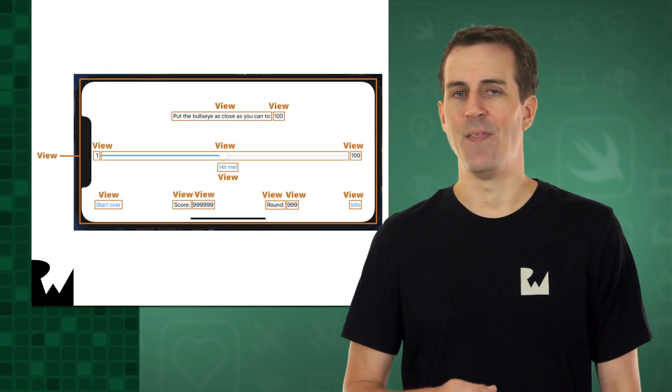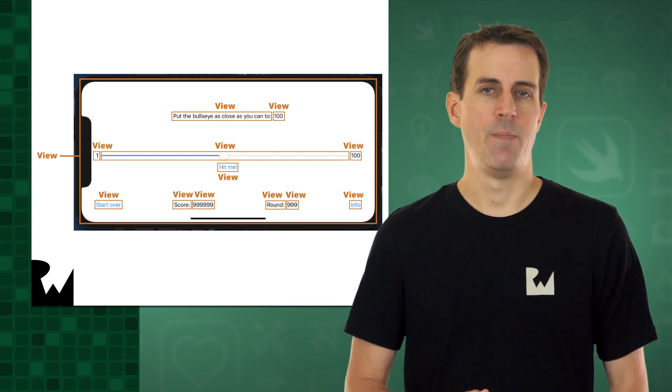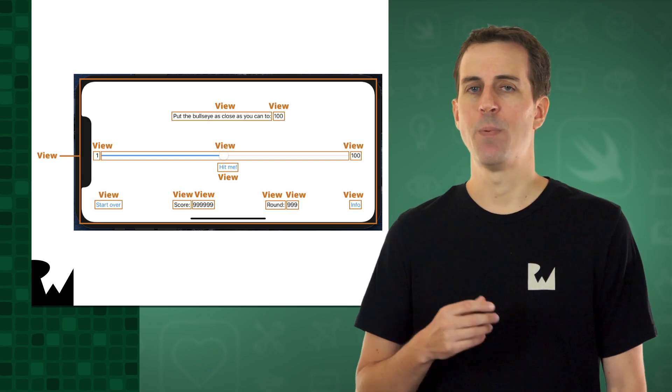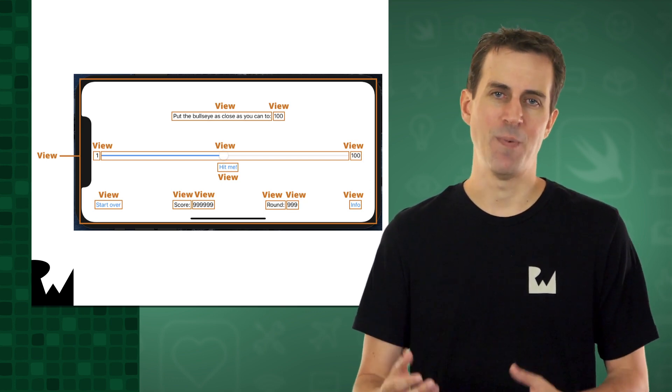Here's what the Bullseye screen will look like at the end of this part of the course, but with all of the visible views highlighted and labeled. Note that some of the views are invisible, and I'll point them out to you soon.